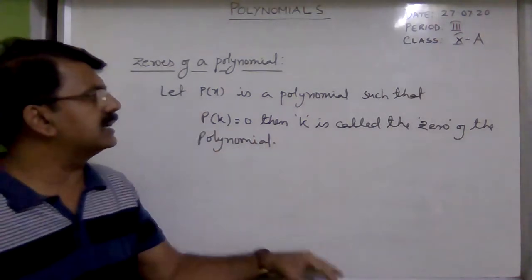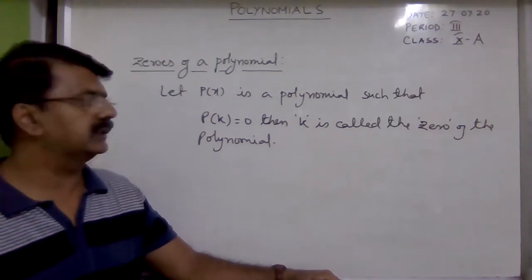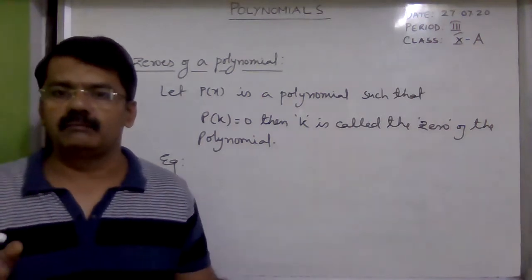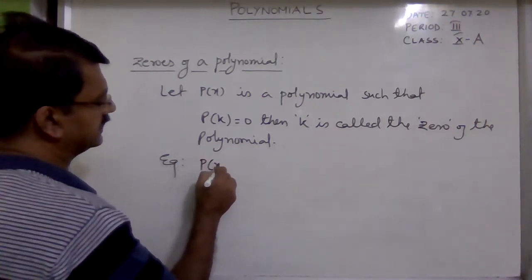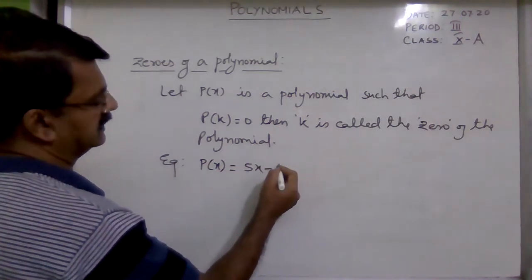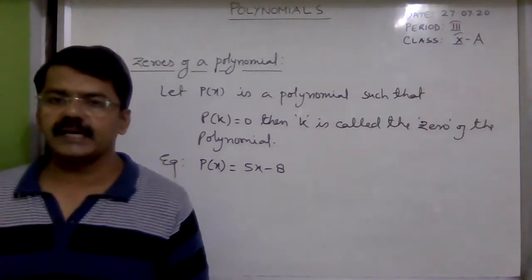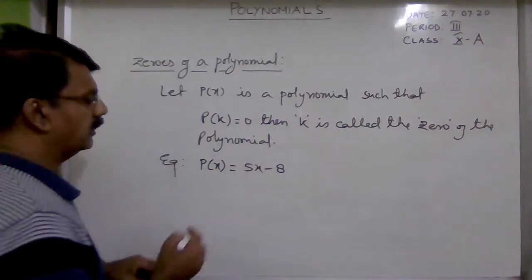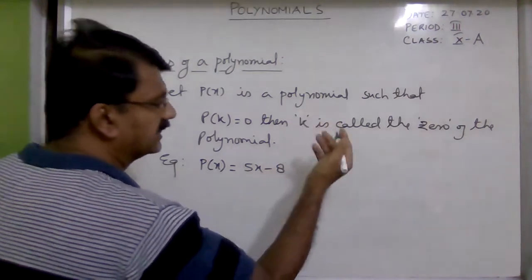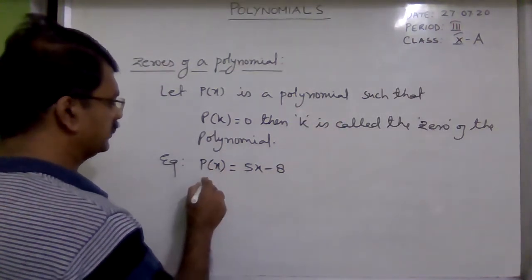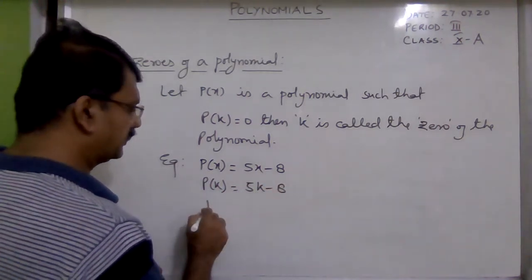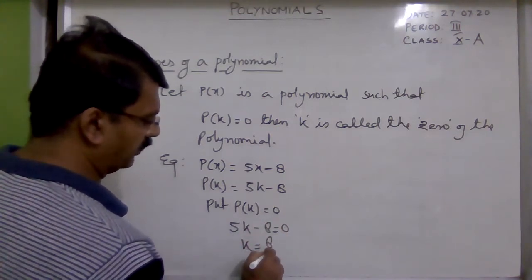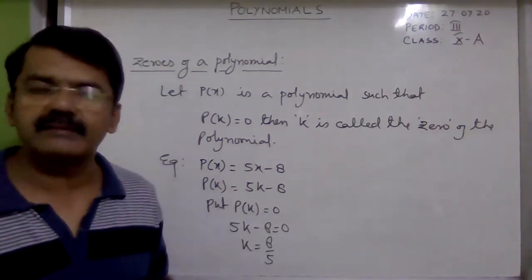So I repeat: if p(x) is a polynomial such that p(k) is equal to 0, then k is called the zero of that polynomial. This example will make things more clear. Suppose p(x) = 5x − 8. You can see the highest power of x here is 1, so it is a linear polynomial. To find the zero, first find p(k): p(k) = 5k − 8. Put p(k) equal to 0, so 5k − 8 = 0.